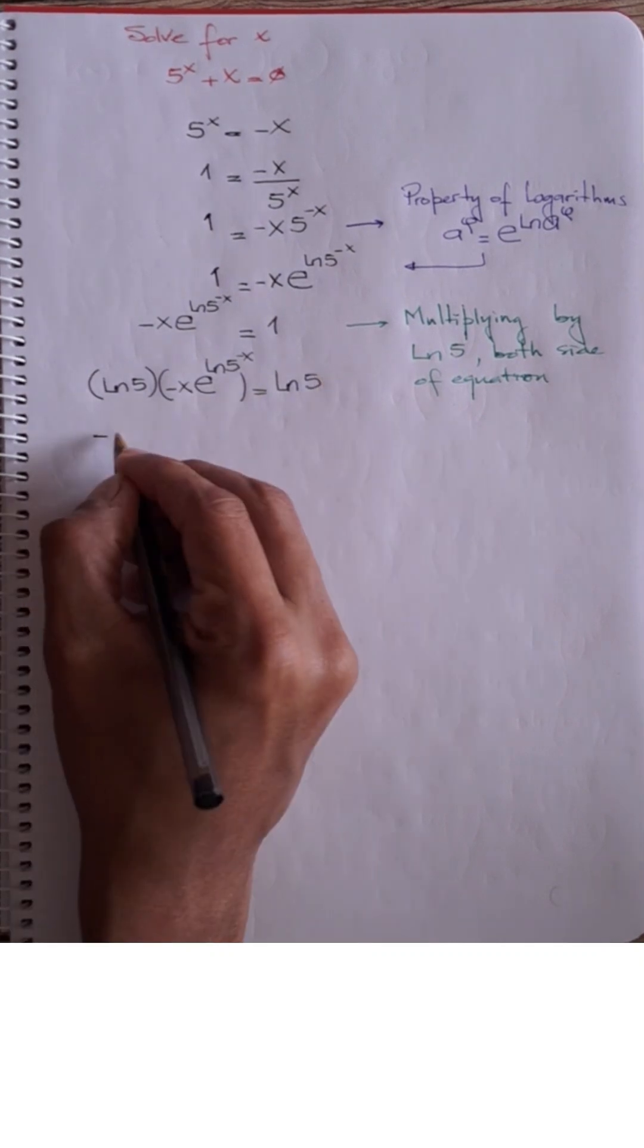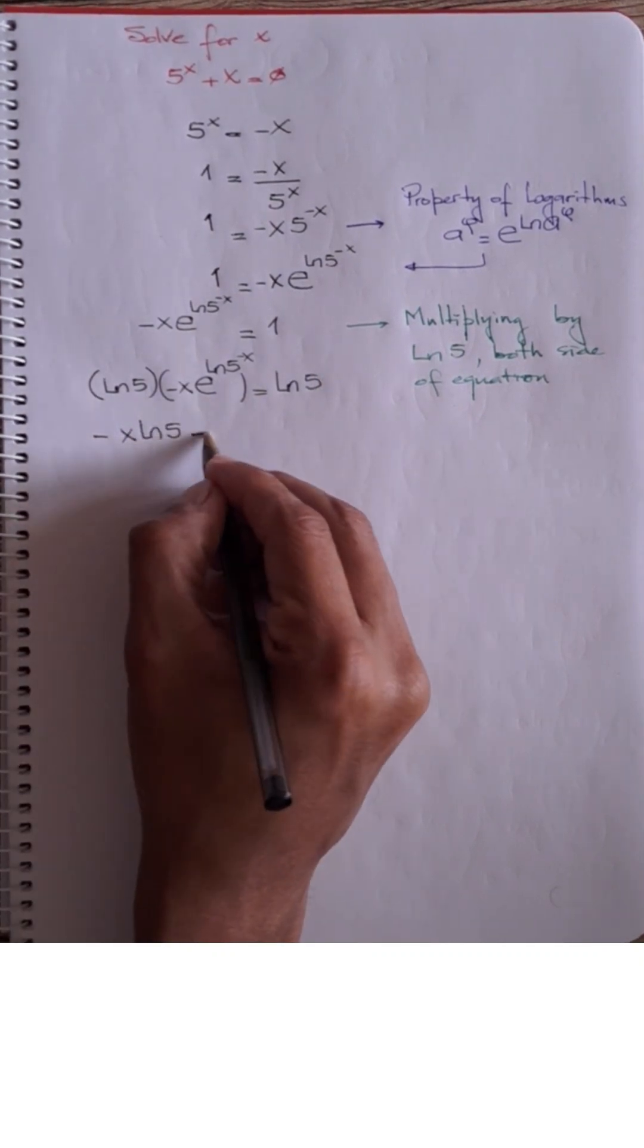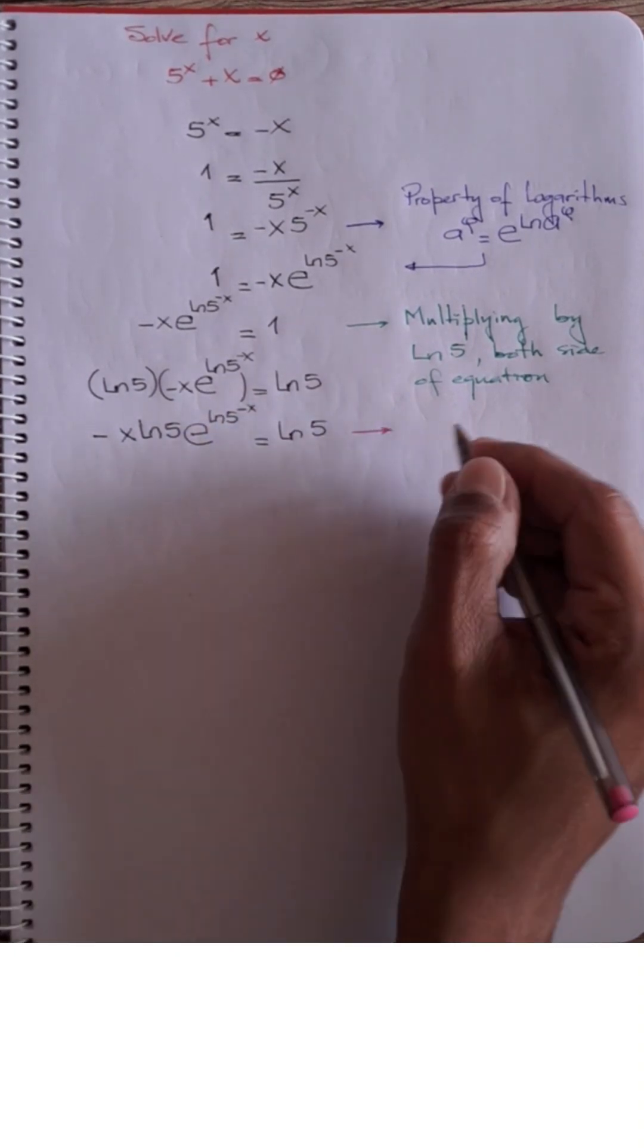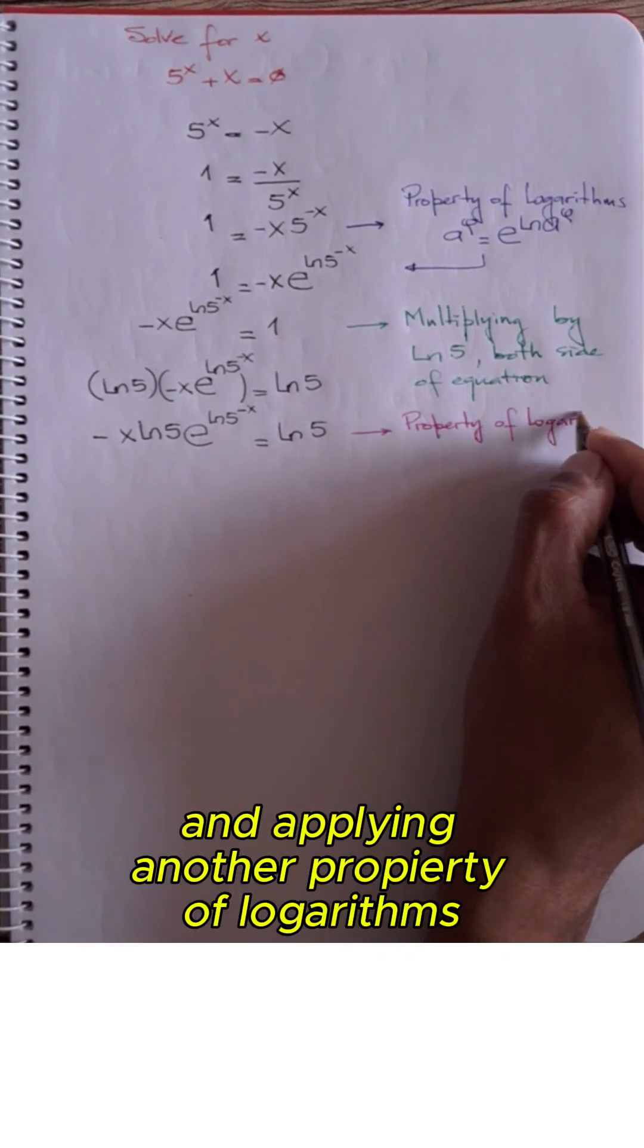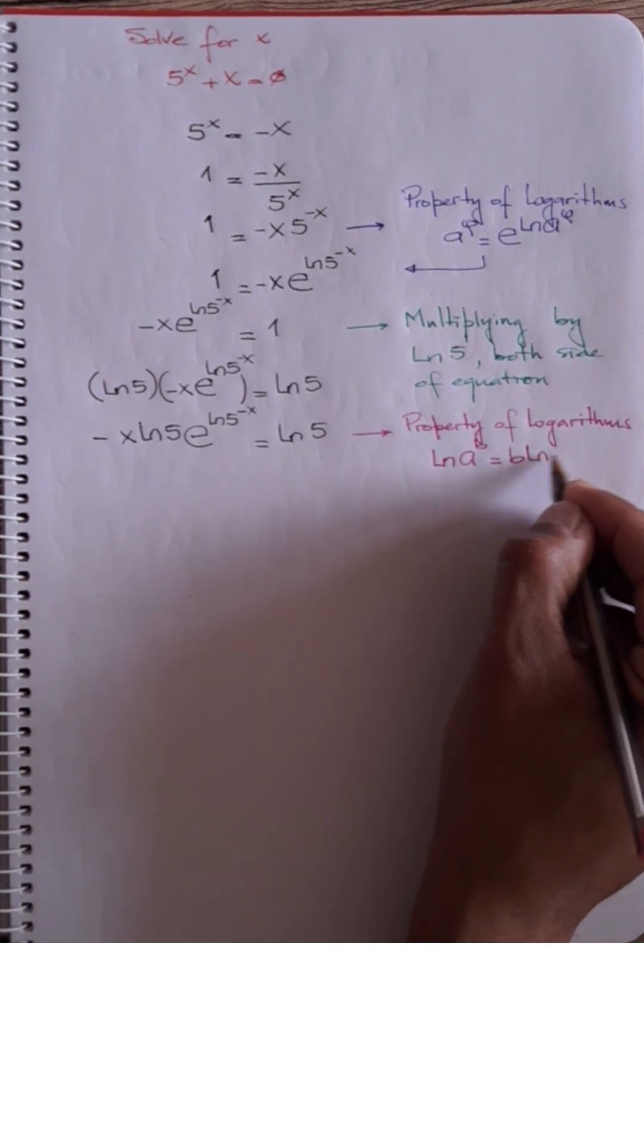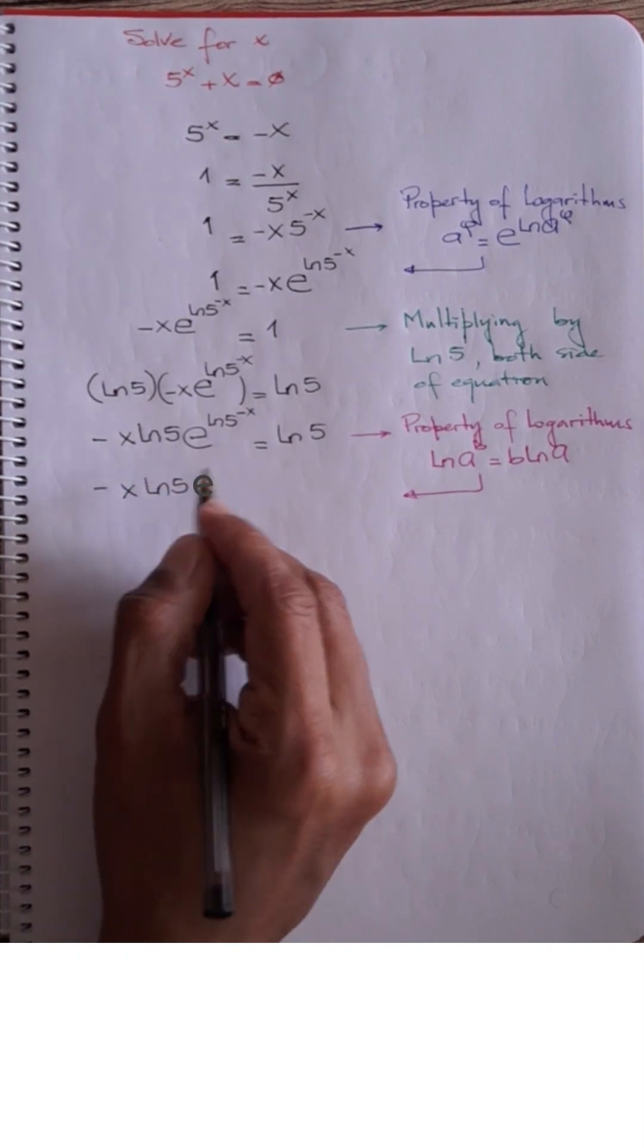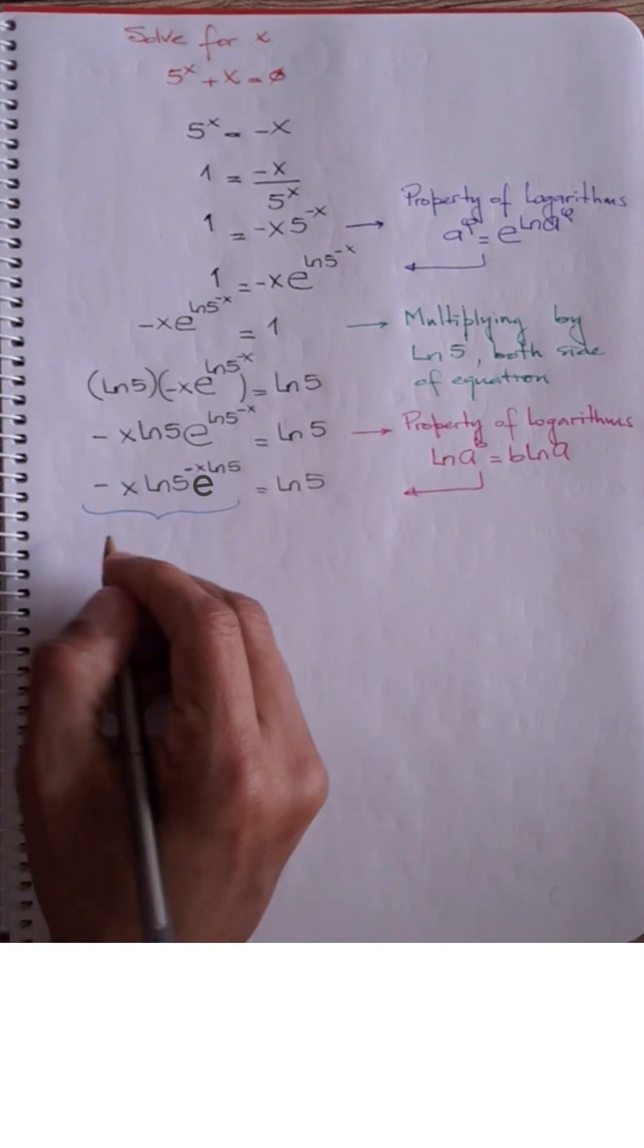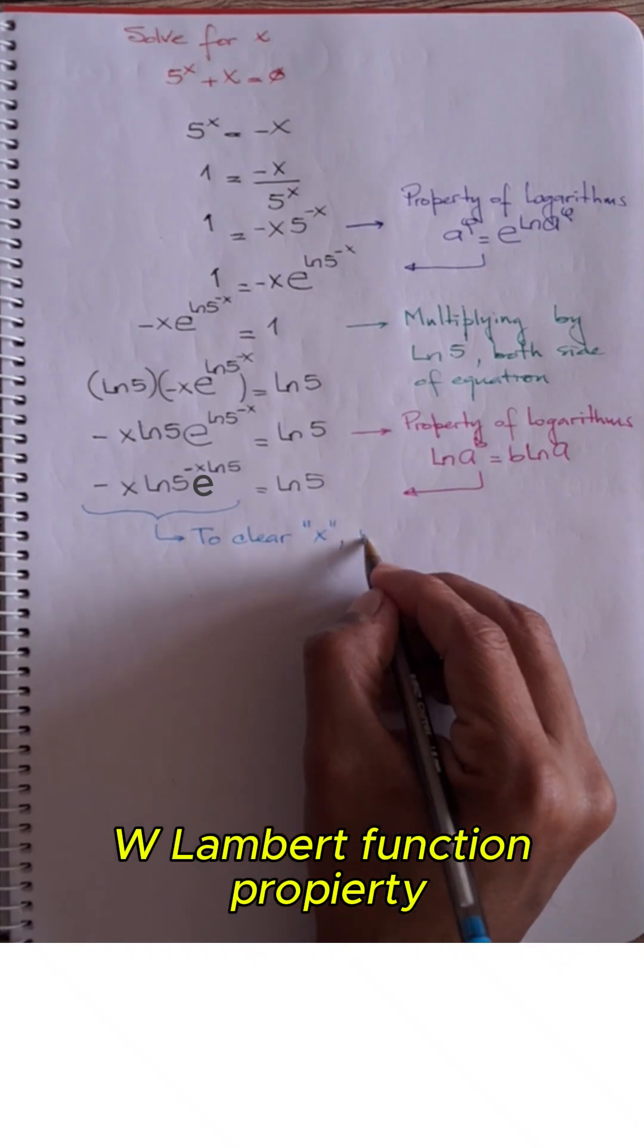Rearranging our equation and applying another property of logarithms, we get the expression that makes it easy to apply the W Lambert function property.